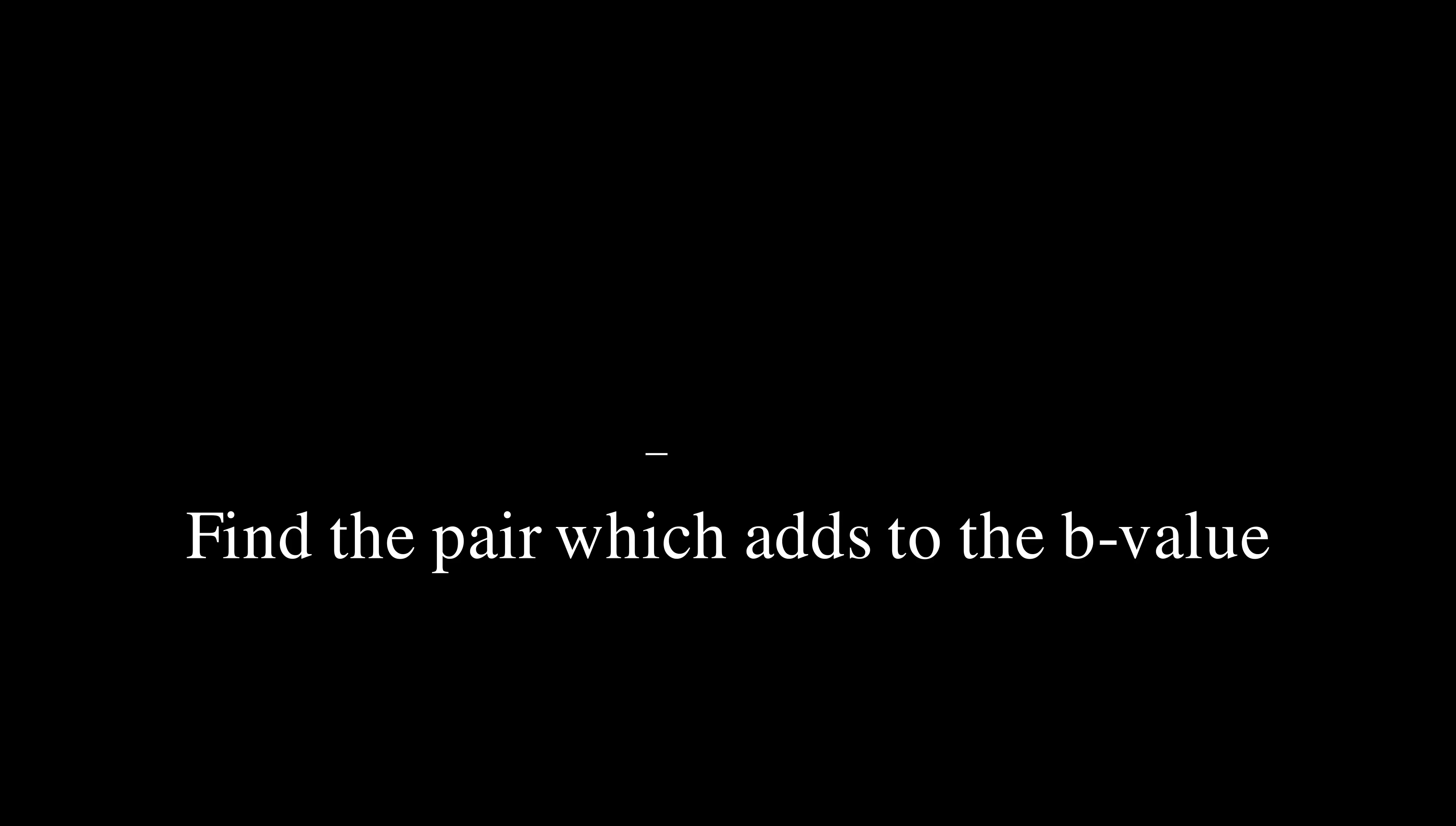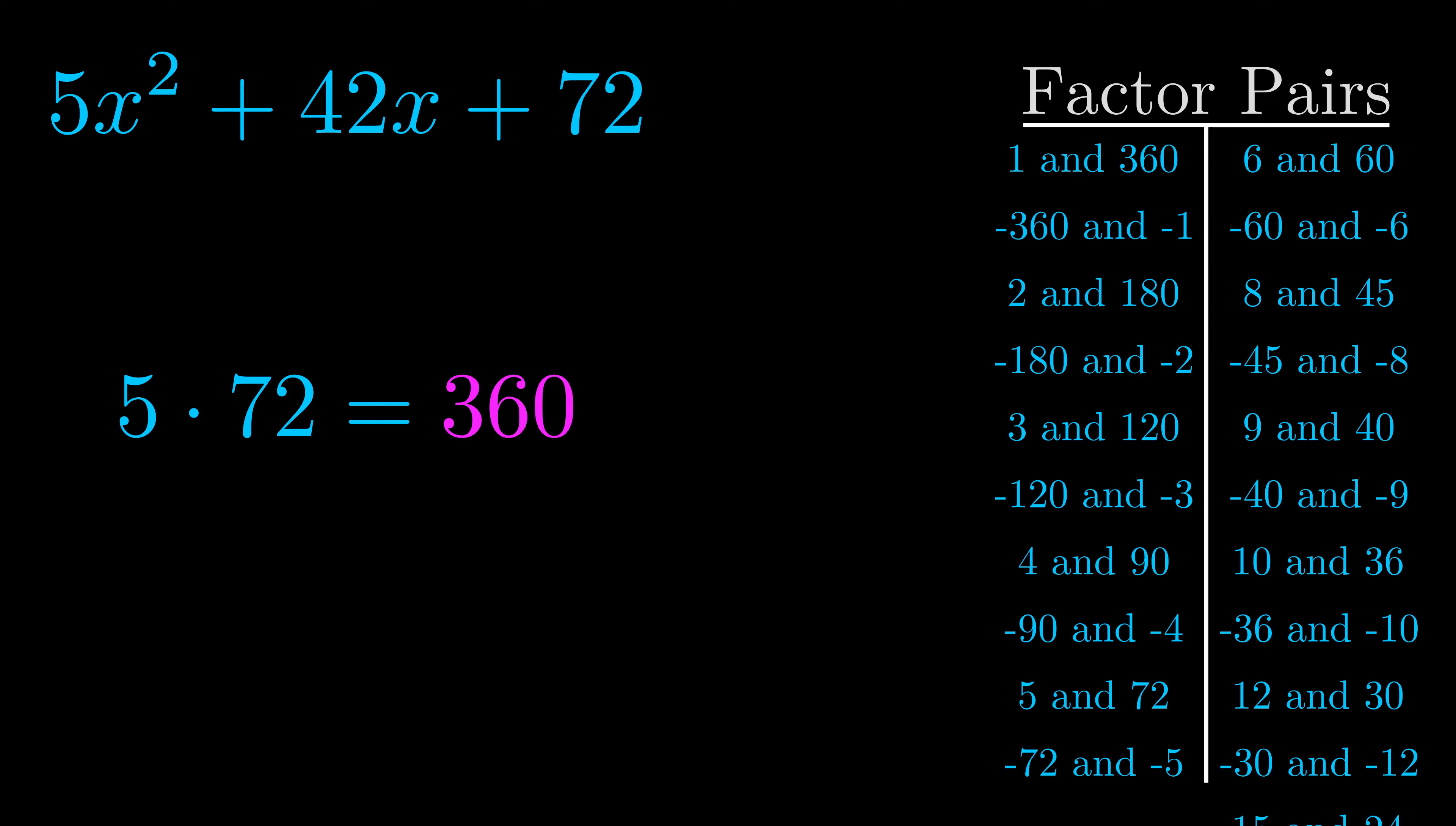The b value is the coefficient on the x term. That's the middle term, the one that we haven't done anything with yet. And really this is the only factor pair that we need.